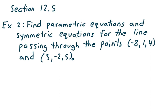To find the equation of a line in 3-space, we need a point that's on the line and a vector that runs parallel to the line we want. But in this example, we're given two points. With these two points, we can actually find a vector that runs parallel to the line we want.